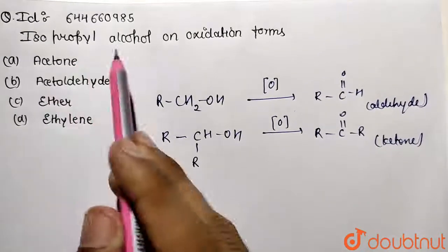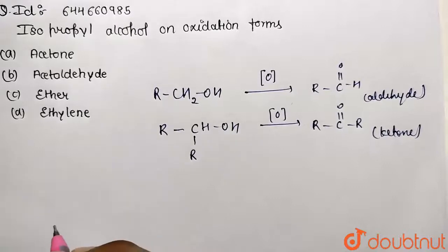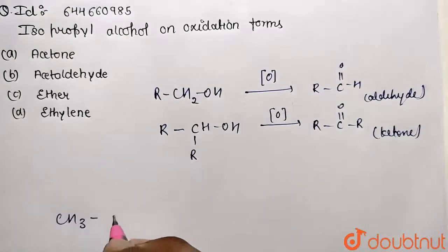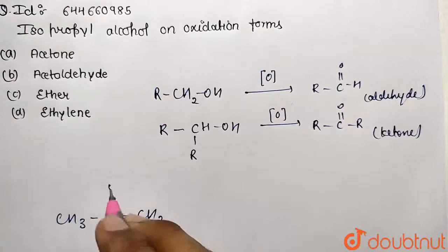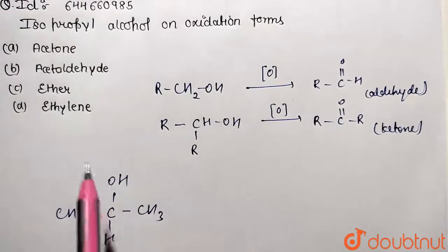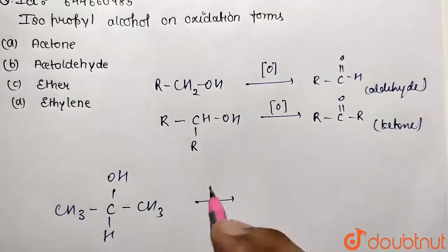How will isopropyl be represented? It is going to have the formula of CH3 followed with C carrying H, and this is going to be CH3, and it contains OH. This is isopropyl alcohol. Now you are going to perform the oxidation reaction.